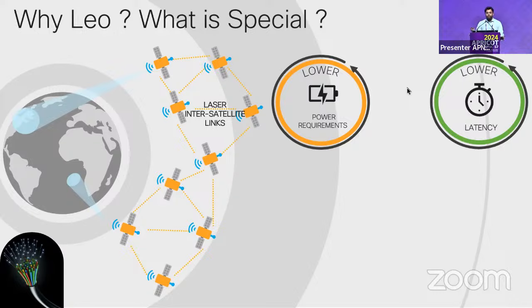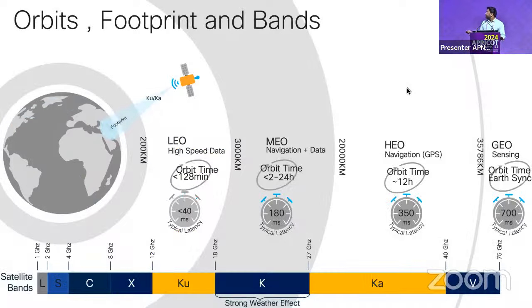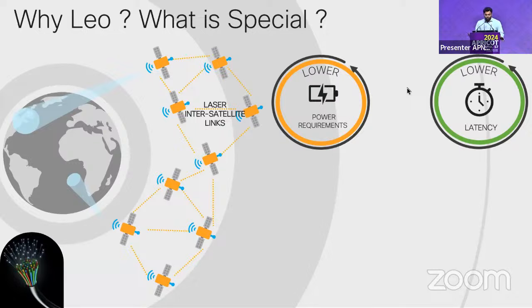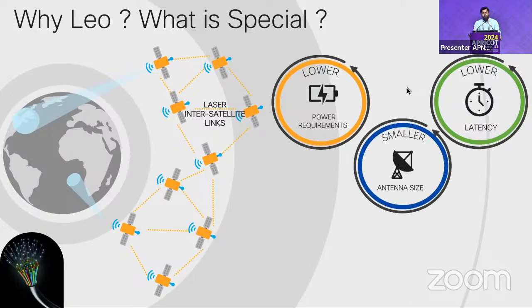Regarding latency: for low earth orbit satellites, typical latency is around 40 milliseconds, and it increases with distance — up to around 700 ms for higher orbits. This is why LEO gives us lower latency compared to GEO satellites.